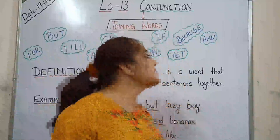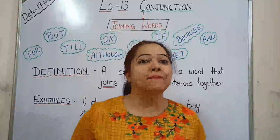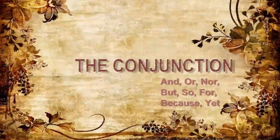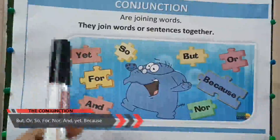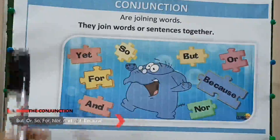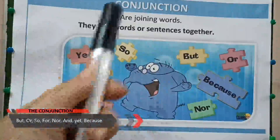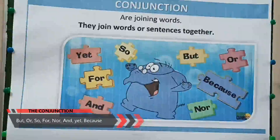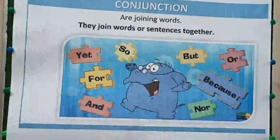Students, this is the description of the conjunction. We will discuss it further through some examples and proper exercises. Let's start with the conjunctions. As I have already told you, conjunctions are the joining words — they join words or sentences together. Here are different conjunctions like yet, for, and, so, but, or, because, nor. We will discuss them one by one.